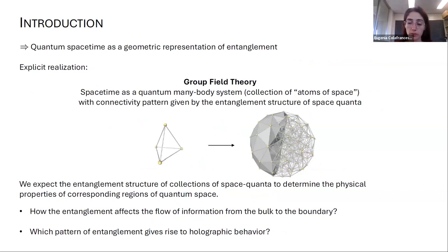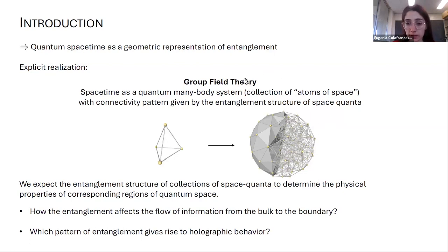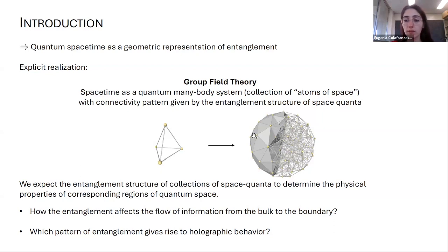A natural question is: is there something at the fundamental level relating gravity, holography, and entanglement, and what can we learn about quantum gravity by exploring this interconnection? I will talk about a particular approach to quantum gravity — group field theory — in which this scenario is explicitly realized. In group field theory, quantum spacetime is a geometric representation of entanglement: spacetime is a collection of atoms of space, effectively a quantum many-body system, and the connectivity of spacetime is given by the entanglement structure of the space quanta.